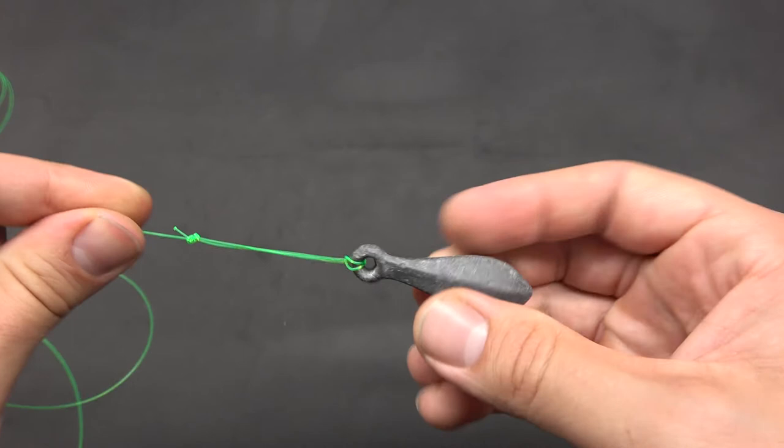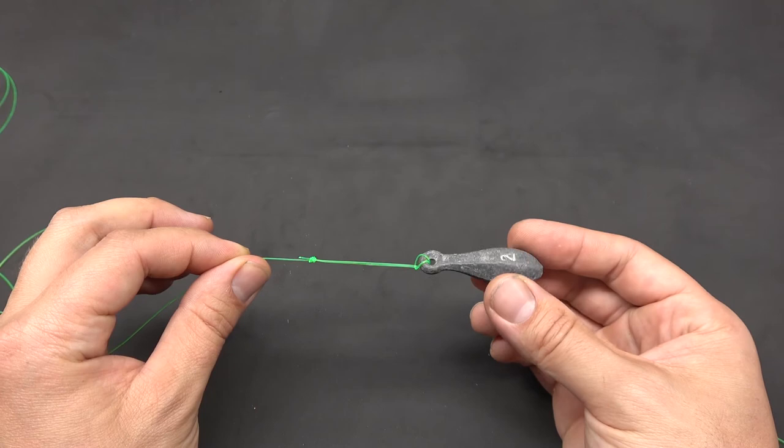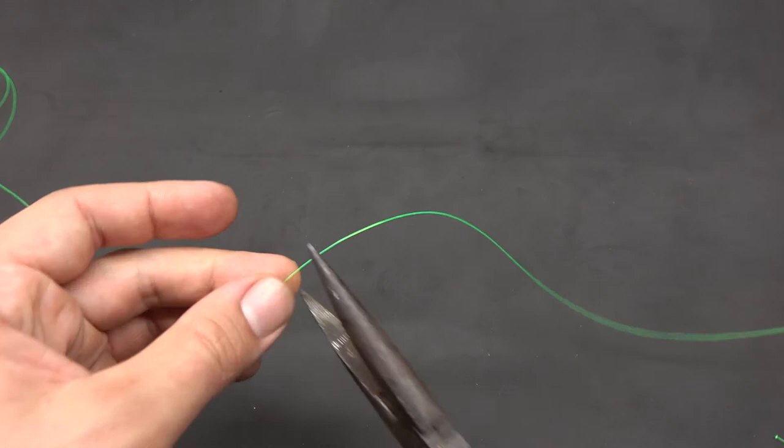That gives you a really quick way to be able to change the weight you're using. The dropper section on this rig only has to be about a foot long, so I'm going to pull about a foot of line off and cut it off.